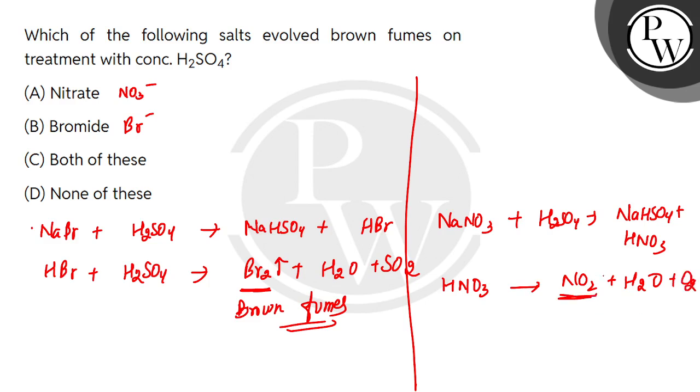O2 is a colorless gas, but NO2 gives brown fumes. So both salts produce brown fumes when treated with concentrated H2SO4. This means option C is correct and the rest are incorrect. I hope you understood. Thank you.